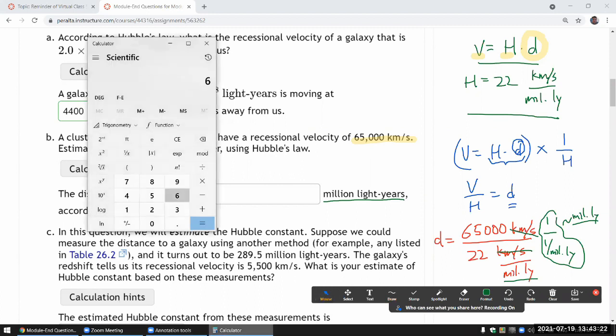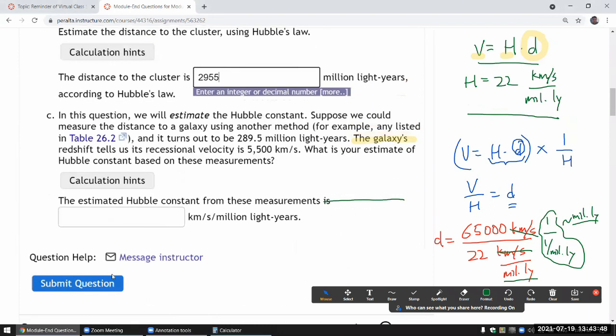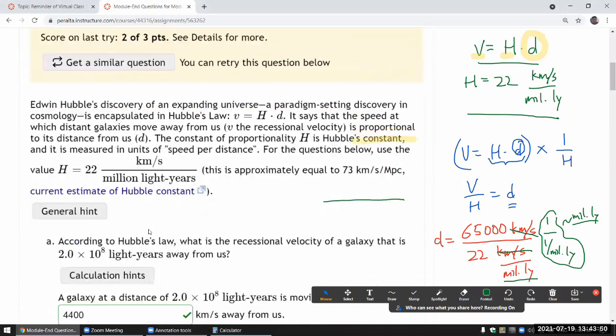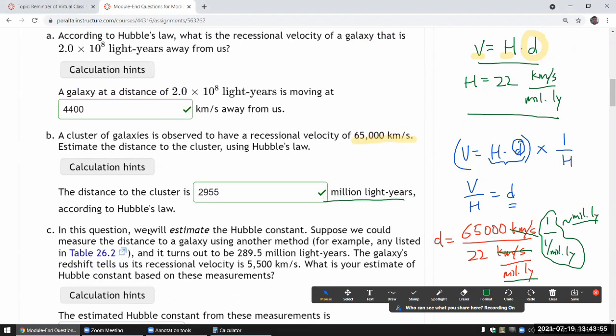So we have 65,000 kilometers per second divided by the Hubble constant, which is 22 kilometers per second per million light years. And that should be the distance in million light years. So 2,955 million light years. That is rather far, but hey, that's the result. So I think that's right. And for number sense purposes, that's about 3 billion light years away.